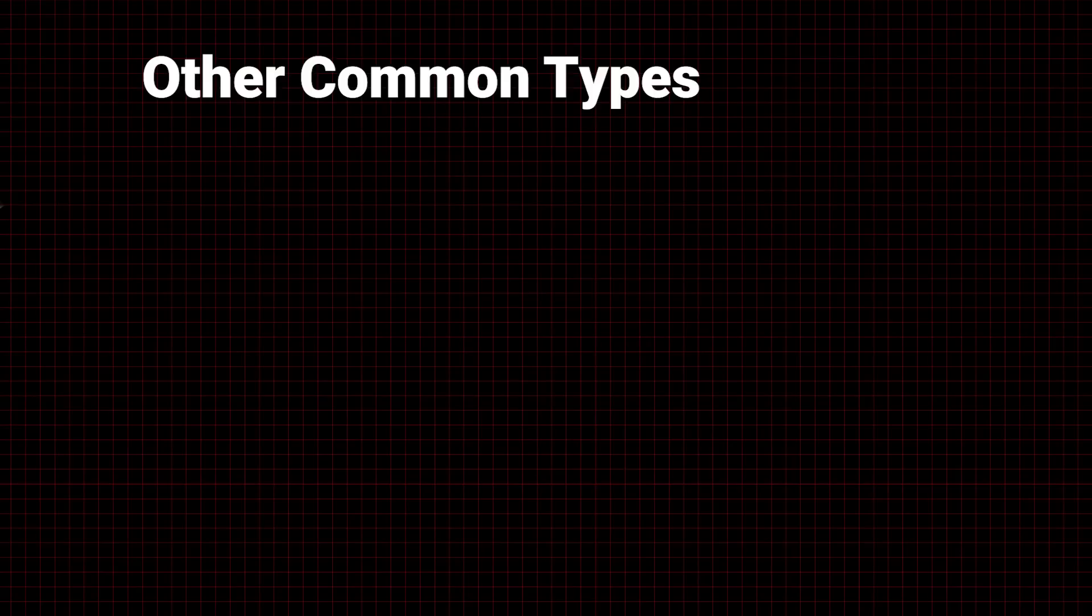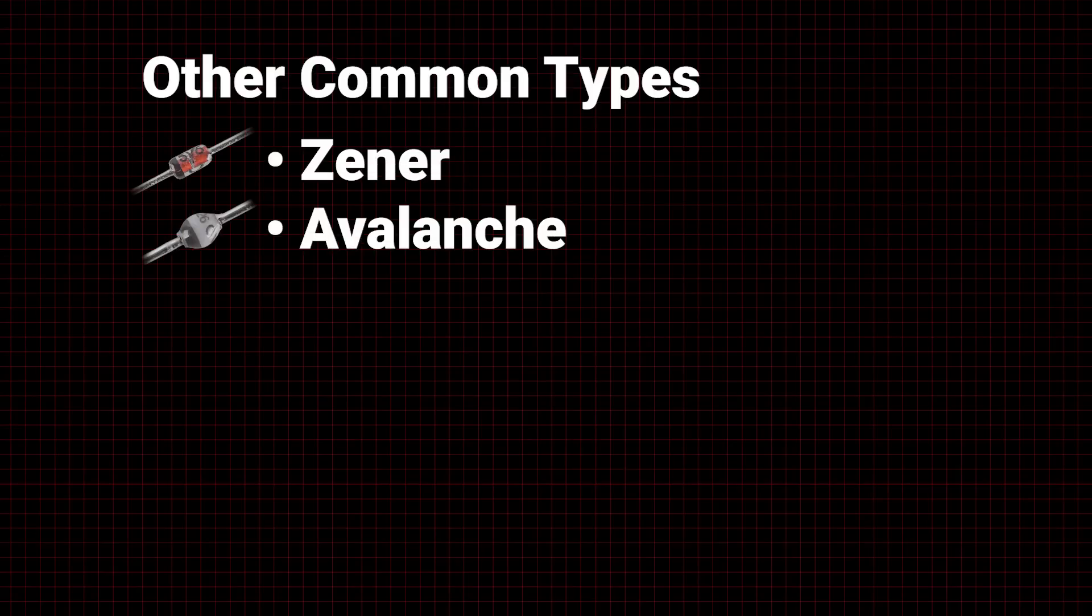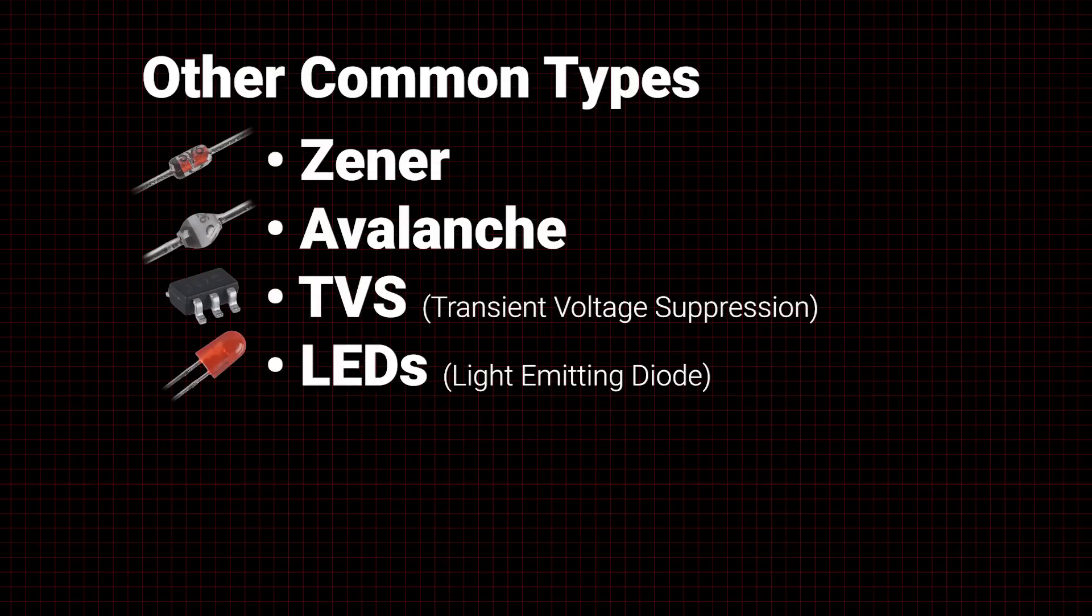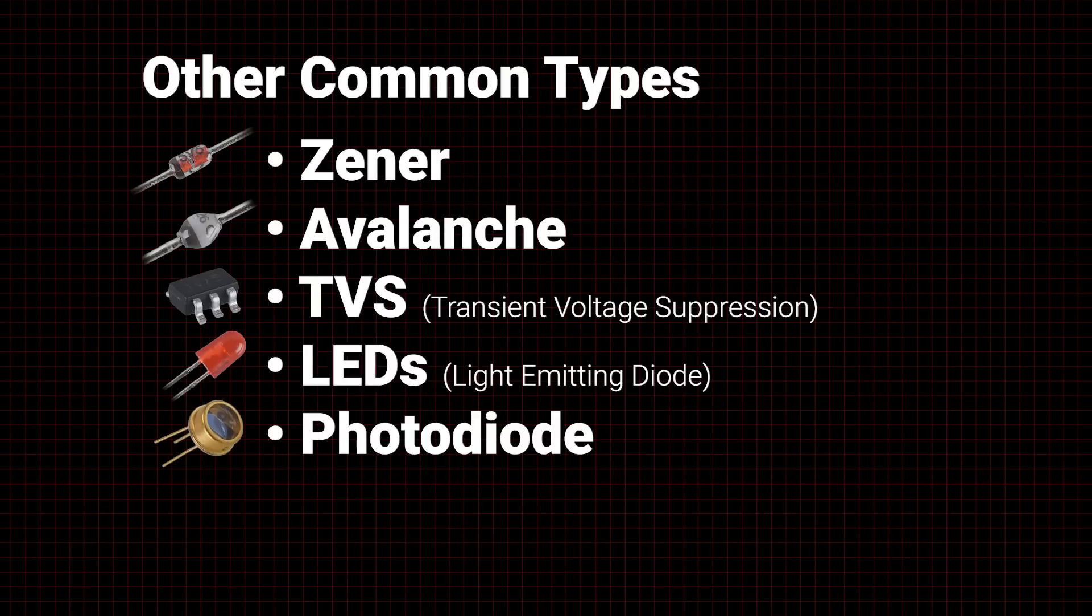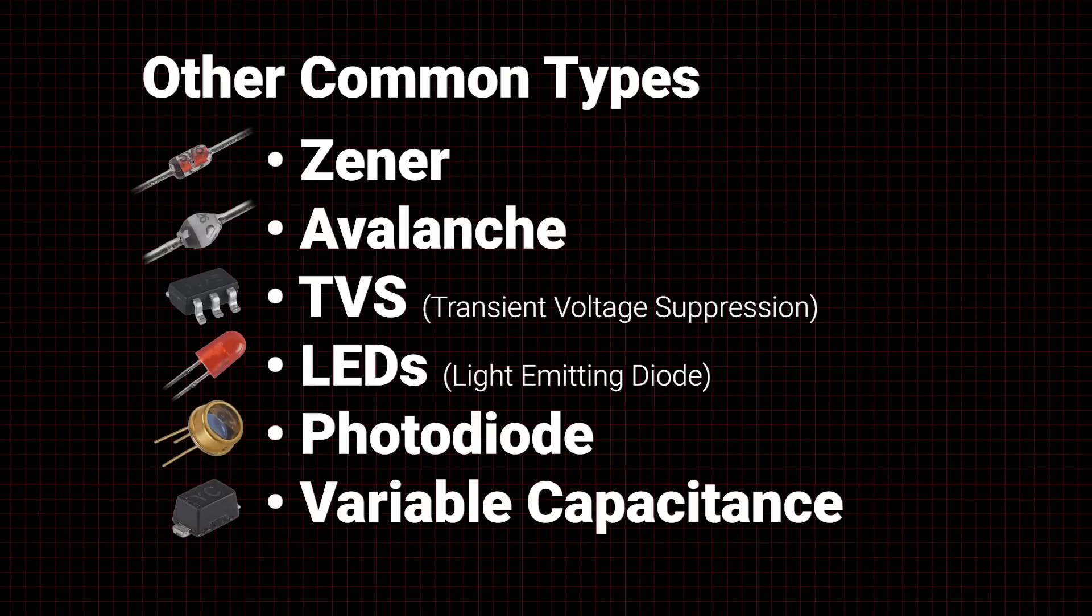Other common diode types include Zener, avalanche, TVS or transient voltage suppression, LEDs or light-emitting diodes, photodiodes, and variable capacitance diodes.